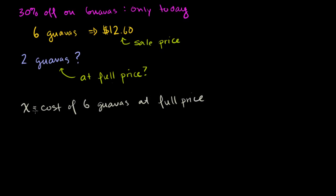So essentially if we take 30% off of this, we should get $12.60. So let's do that. So if we have the full price of six guavas, we're going to take 30% off of that. So that's the same thing as 0.30, or I could just write 0.3. My wife is always bugging me to write zeros before decimals. So that's the full price of six guavas minus 0.30 times the full price of guavas. So I'm literally just taking 30% off of the full price.